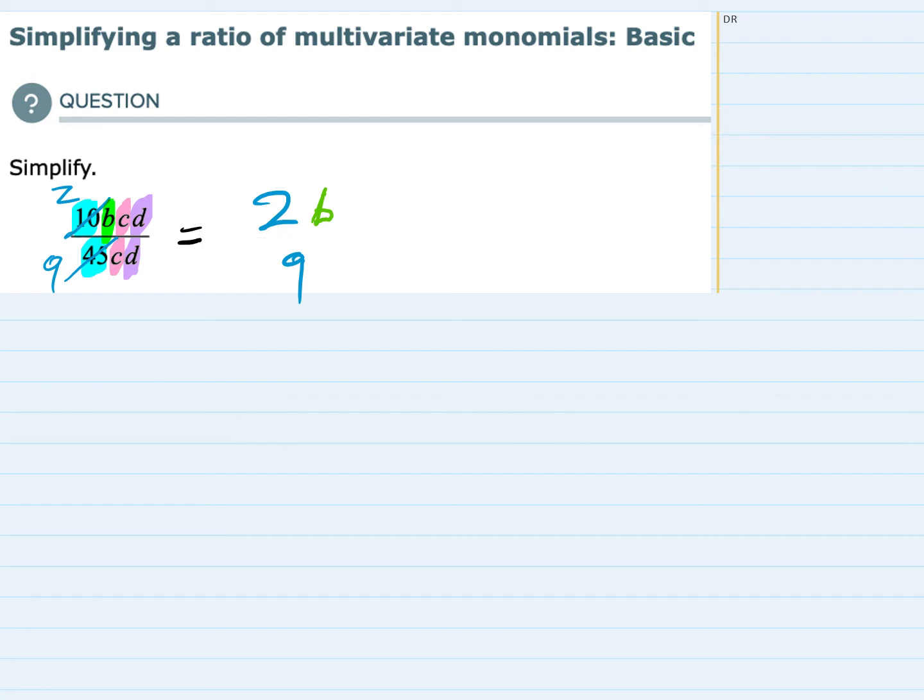So we are left with just 2b over 9 as our simplified expression.